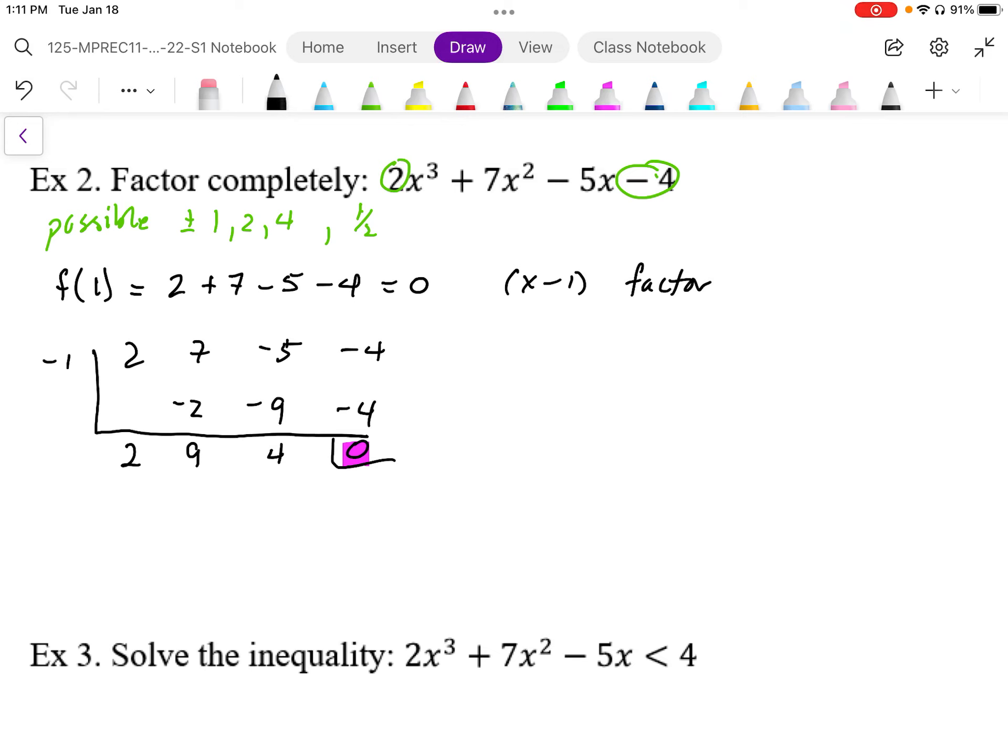So at this point, we end up with this polynomial. This polynomial here, it's a quadratic. We end up with 2x squared plus 9x plus 4. That's a factor. And our original factor that we had figured out was going to be the x minus 1, so we had now partially factored.